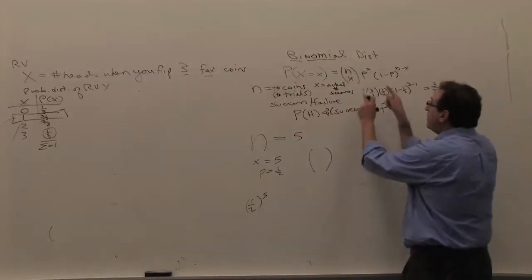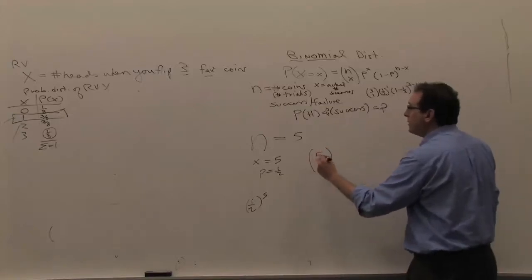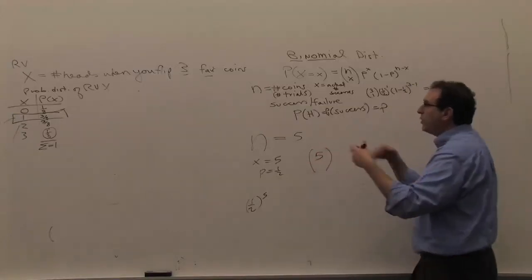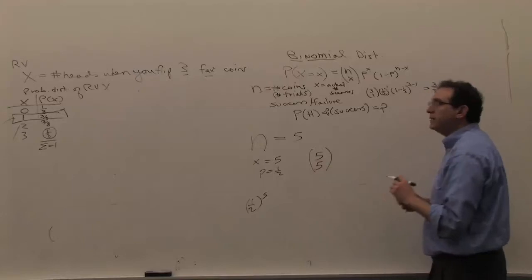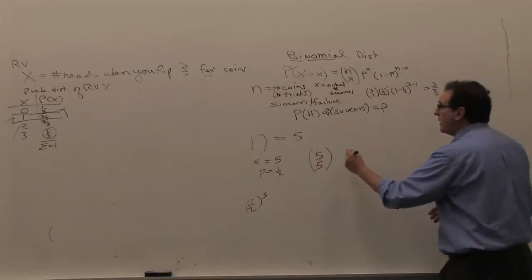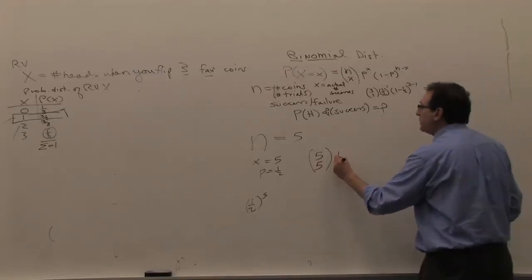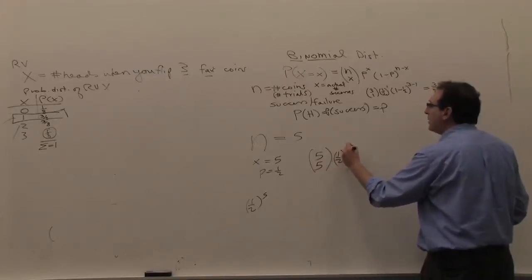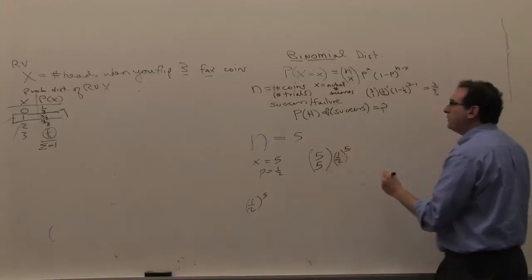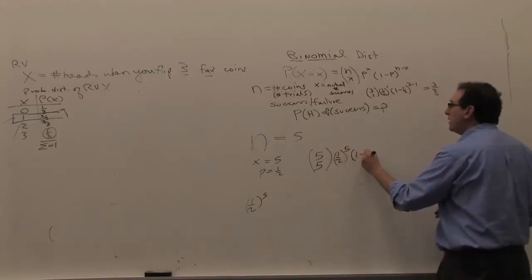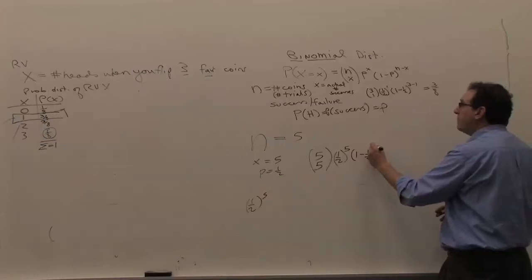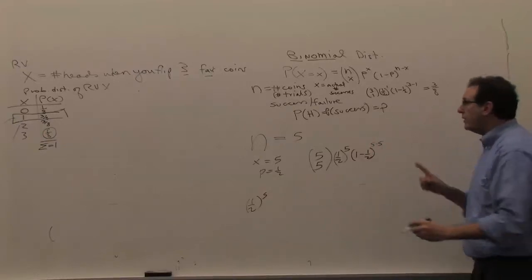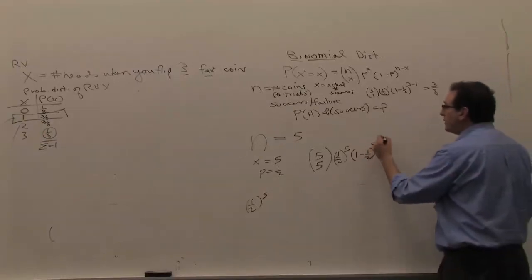But doing it by the binomial formula, we have five coins, or five trials, and all five of them have got to be heads. The chance of a head is 50%, and the chance of getting five in a row is to the fifth power. What's the chance of a tail? Also a half, but how many tails are there? Five minus five, or zero. Anything to the zero power is equal to one, so this comes out to one.